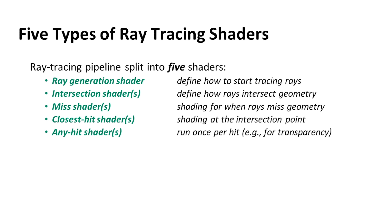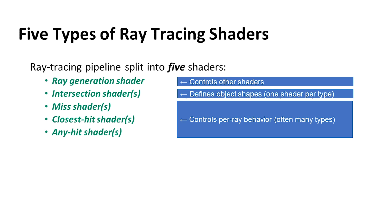Then there's these last three shaders which are sort of a group. There's a miss shader which says, well, I shot a ray and it didn't hit anything — what do I get? There's a closest hit shader which is, well, I hit something, what shall I do with it? Kind of a traditional shader. But you can also spawn off rays at that point such as reflection or shadow. And there's also any hit shaders. So just to sum up: we have the ray generation shader which controls all the shaders, the intersection shader which essentially defines the object shape, and the per-ray behavior shaders: miss, closest hit, and any hit.